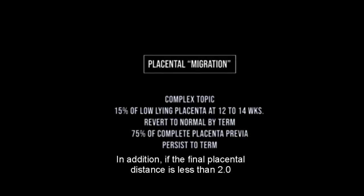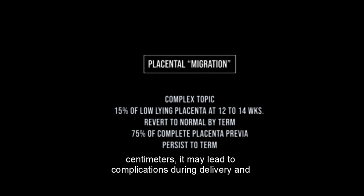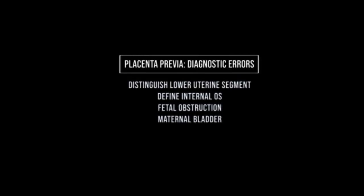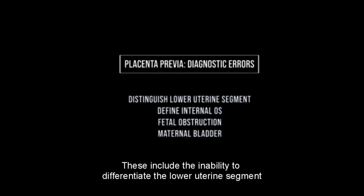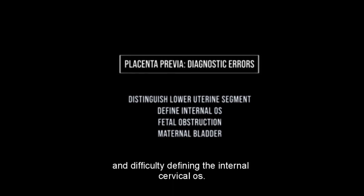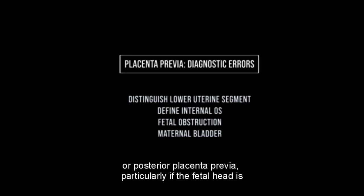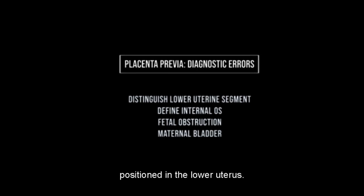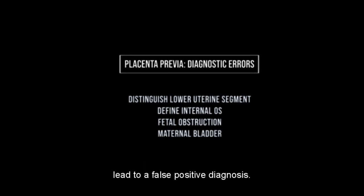If the final placental distance is less than 2.0 cm, it may lead to complications during delivery and require a C-section. It can be difficult to identify placenta previa due to certain factors, including the inability to differentiate the lower uterine segment and difficulty defining the internal cervical os. The fetal position can sometimes obscure a posterior low-lying placenta or posterior placenta previa, particularly if the fetal head is positioned in the lower uterus. Additionally, uterine contractions and a full maternal bladder can sometimes lead to a false positive diagnosis.